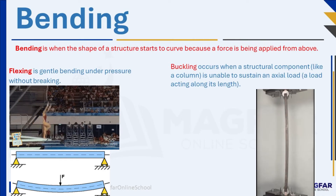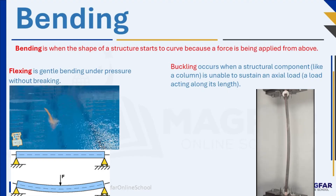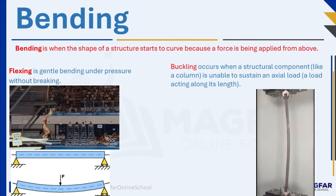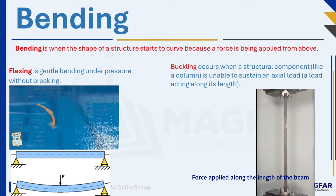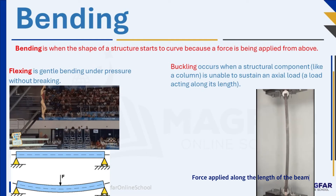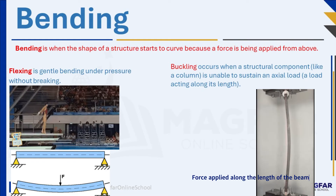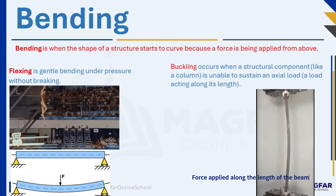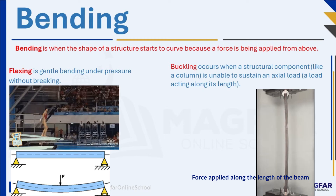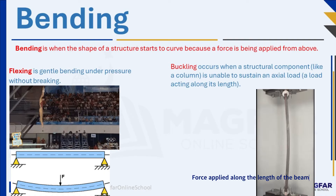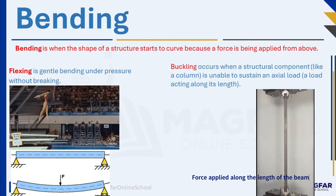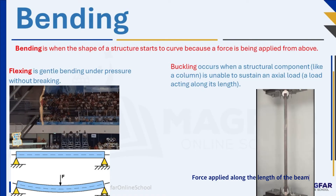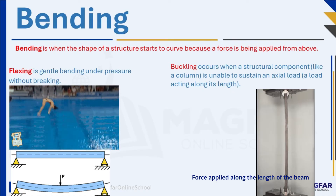Buckling happens when a long, slender object cannot handle a strong force pushing against it and it ends up bending or curving out of shape. In engineering, buckling occurs when a structural component, like a column, is unable to sustain an axial load — a load acting along its length. Here's what happens during buckling: you gradually increase the load on the column, and at a critical point, the column suddenly changes shape and its stability is lost. It may buckle sideways or collapse. Buckling is a serious issue because it can lead to the complete failure of a structure.